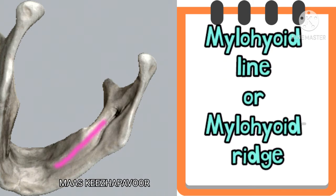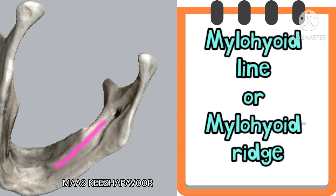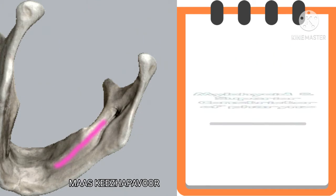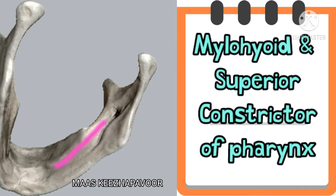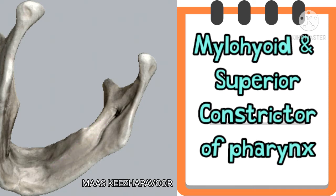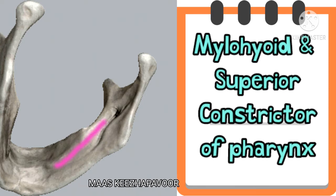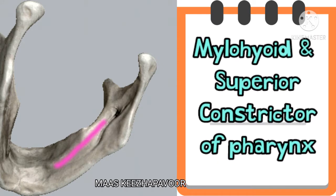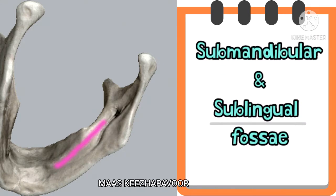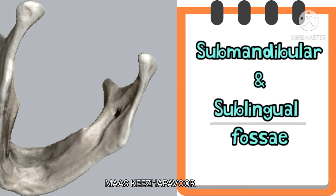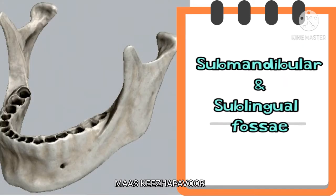It is the mylohyoid line or mylohyoid ridge. The muscles mylohyoid and superior constrictor of pharynx are attached to this line. The submandibular and sublingual fossae are separated by it.